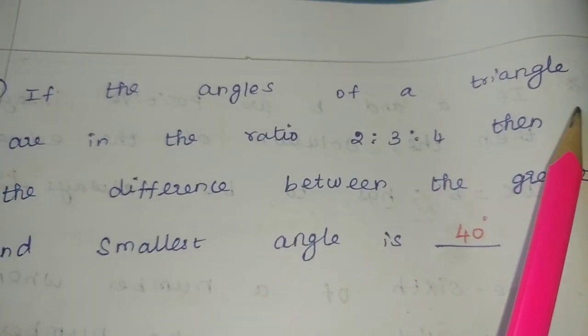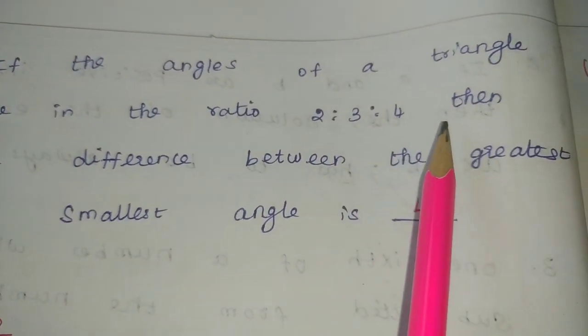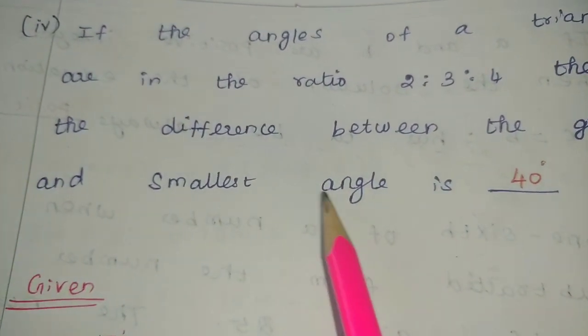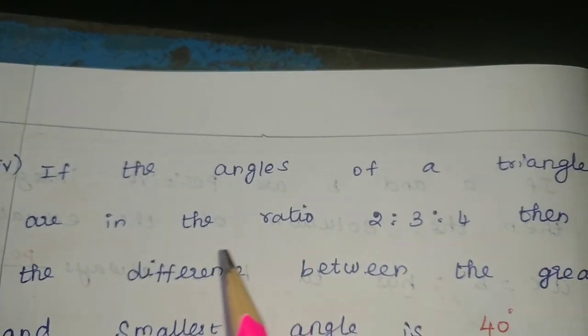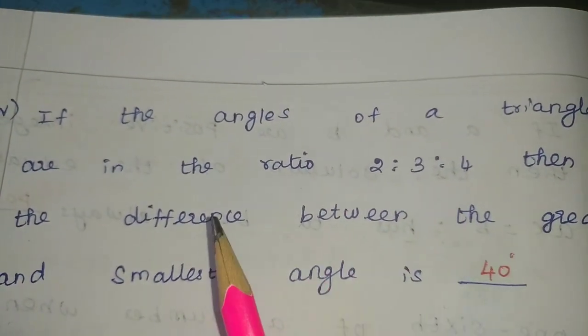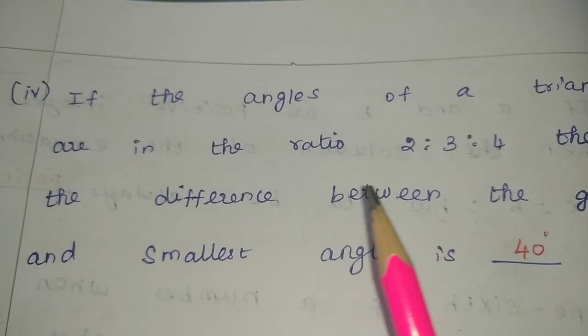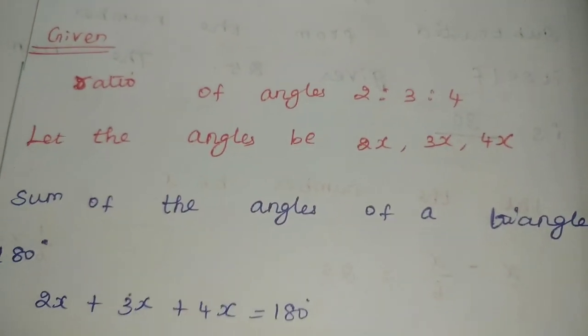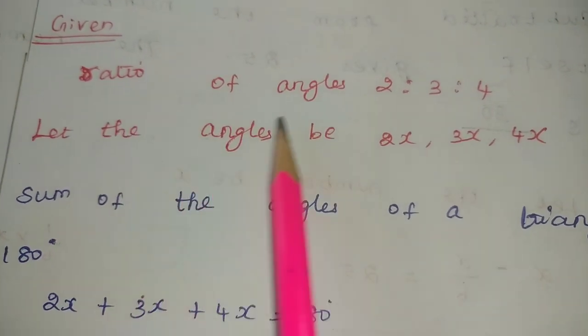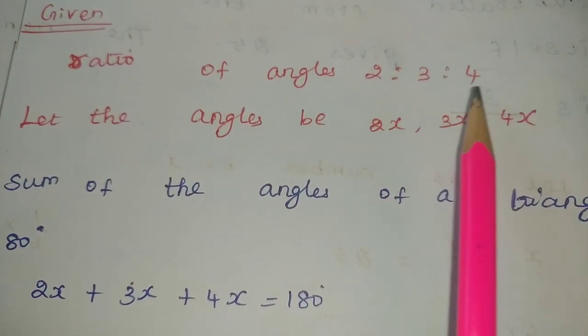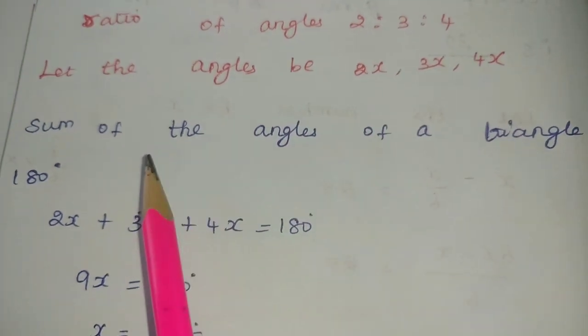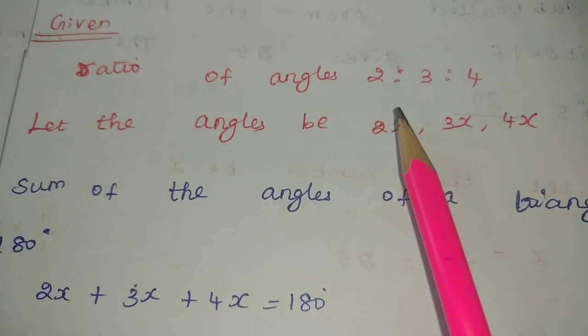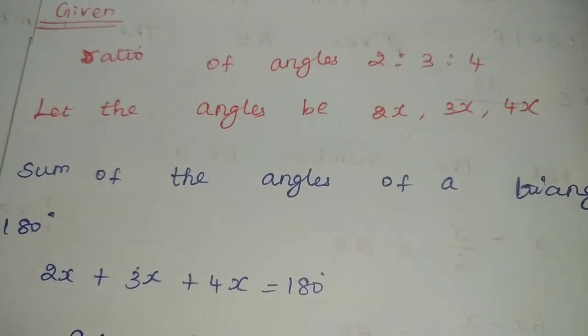Fourth one: if the angles of a triangle are in the ratio 2 is to 3 is to 4, then the difference between the greatest and smallest angle is dash. Given the ratio of angles, let the angles be 2x, 3x, and 4x.